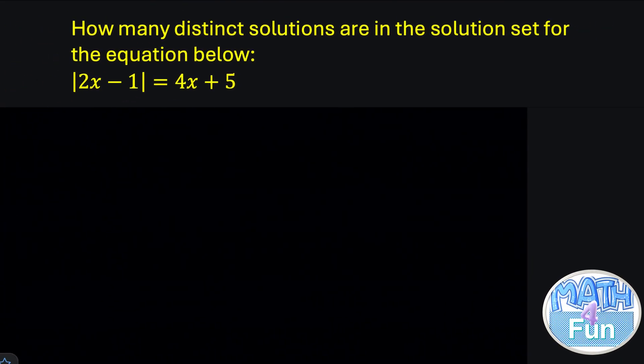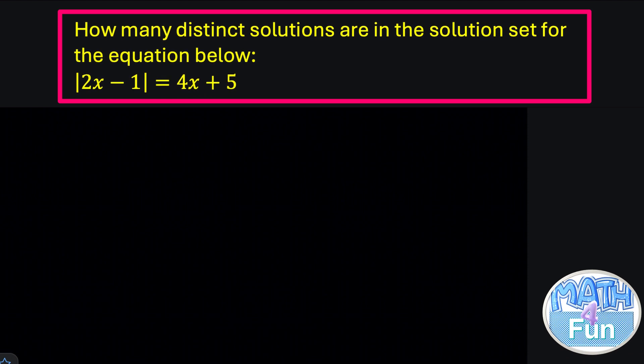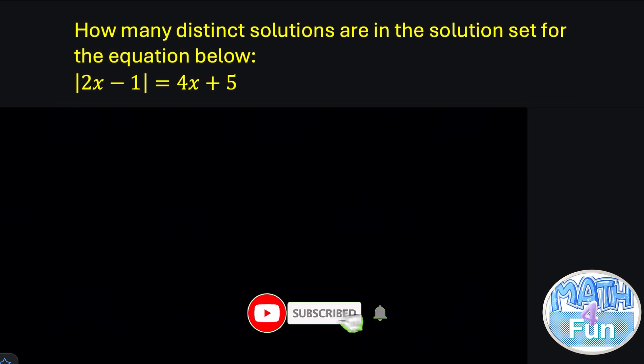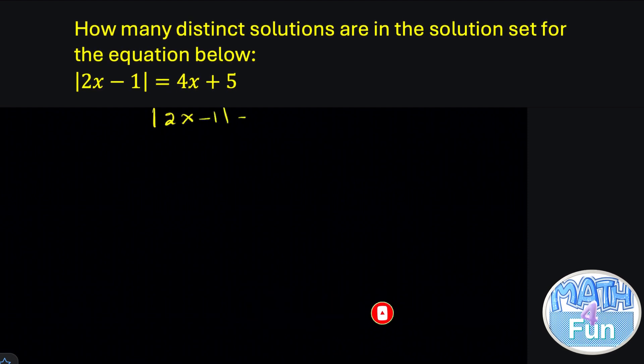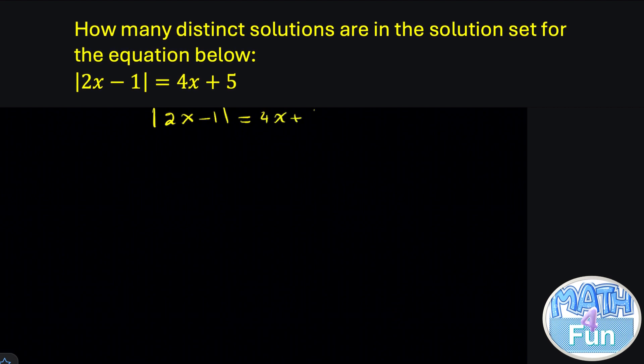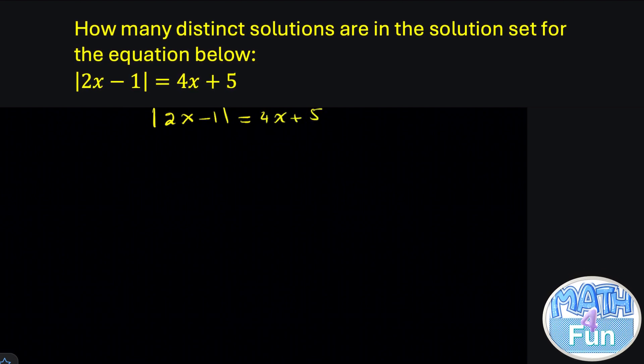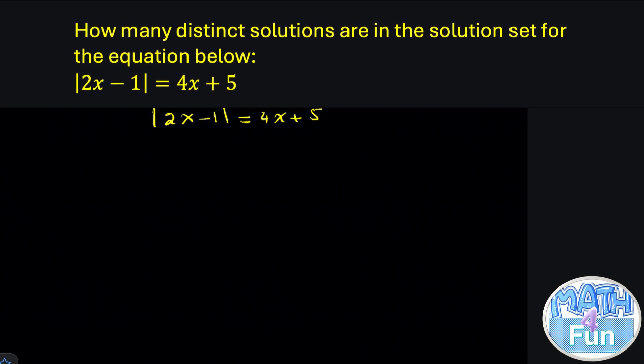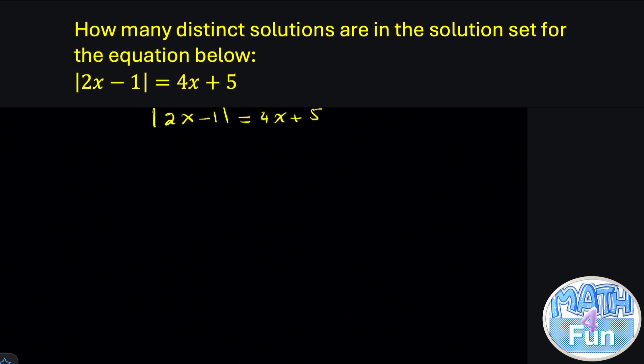Here they are asking how many distinct solutions are in the solution set for the equation below. The equation is absolute 2x minus 1 equal to 4x plus 5. Let's write it. Absolute 2x minus 1 equal to 4x plus 5. They're not asking for the solution. They're asking how many solutions. So if you have 1 or 2 or 3 or 4 or other. So what do we do here?